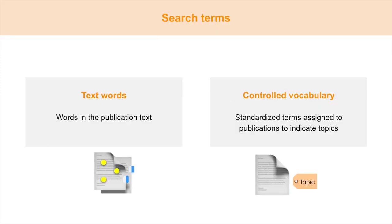The next building block is search terms. To describe research ideas, use two types of terminology: text words, which are the words that may appear in a publication's text, and controlled vocabulary, which are the standardized terms assigned to publications to indicate the topics covered.